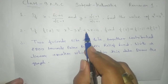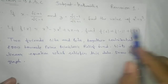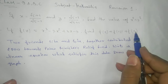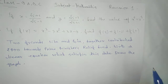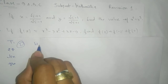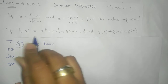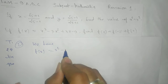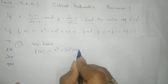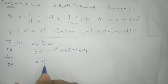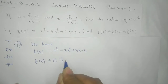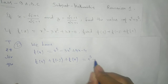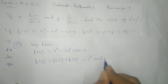Next, the second problem: if f(x) equals x cubed minus 3x squared plus 3x minus 4, find the value of f(2) plus f(minus 2) plus f(0). This is very simple — we just need good presentation. We substitute the values of x: f(2) plus f(minus 2) plus f(0) equals 2 cubed minus 3 into 2 squared plus 3 into 2 minus 4...